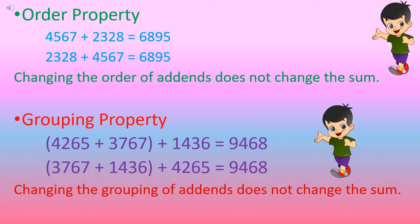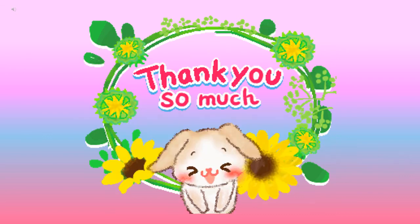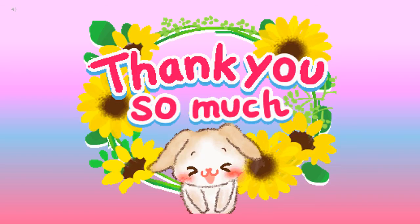So now you know two properties of addition. In the previous video, you learned the order property, which says we can add numbers in any order and the answer will remain the same. In this video, you have learned the grouping property, which says that changing the grouping of addends does not change the sum. In the next video, we will learn adding 0 to a number and adding 1, 10, 100, and 1,000 to a number. Till then, bye-bye.